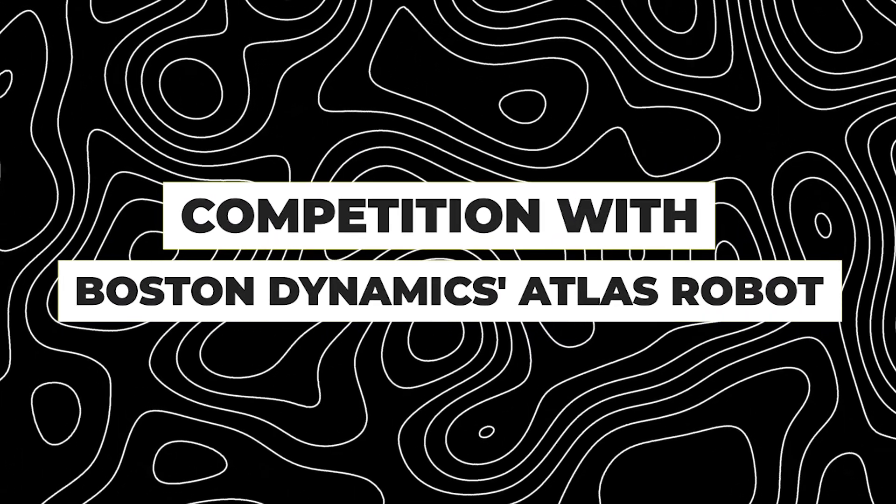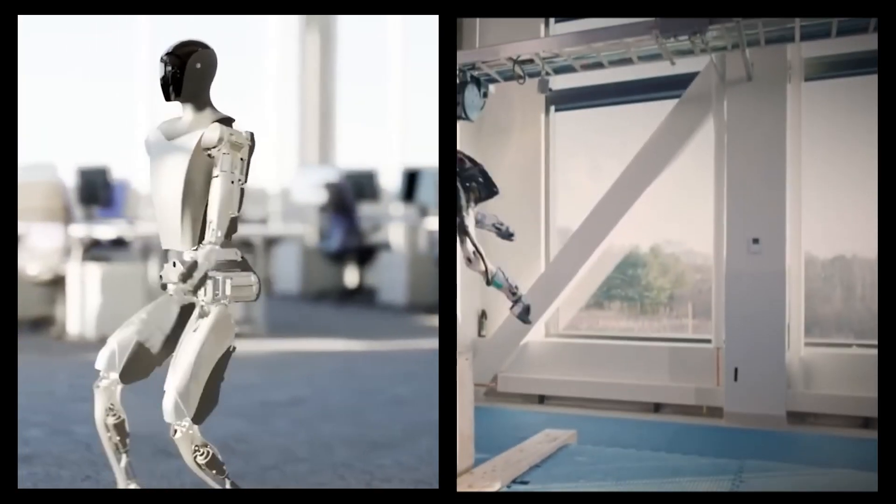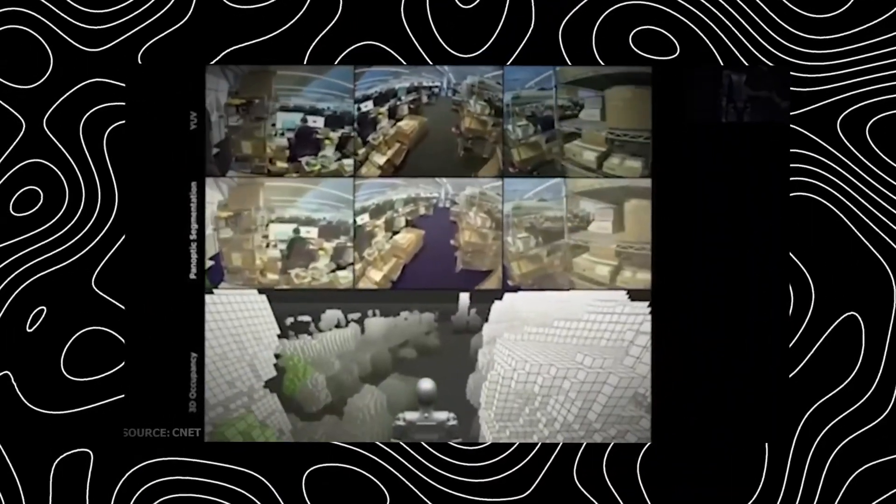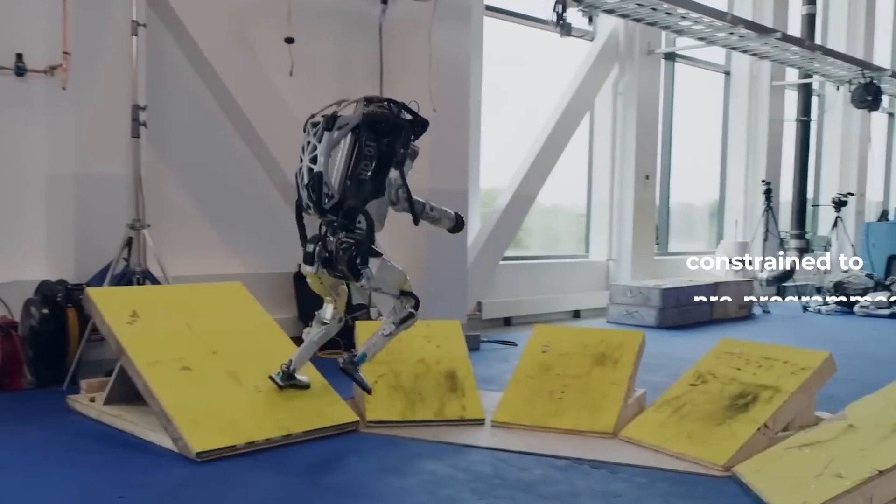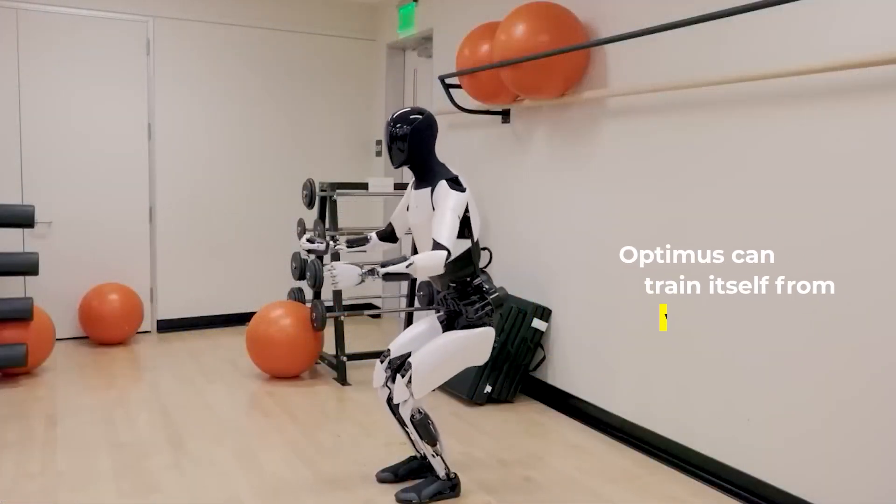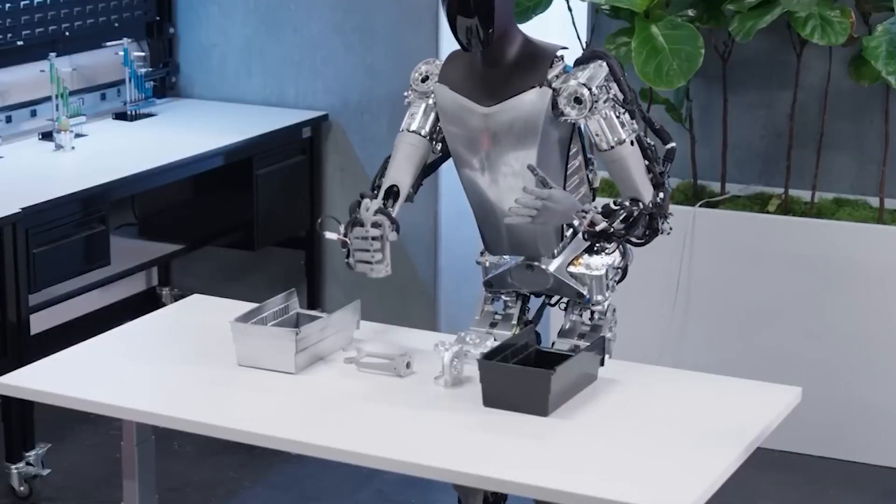While Optimus Robot shares the robotic stage with formidable competitors like Boston Dynamics Atlas Robot, the key differentiator lies in its self-learning capabilities. Unlike Atlas, which is constrained to pre-programmed tasks, Optimus can train itself from video data, opening up possibilities for a broader range of applications.